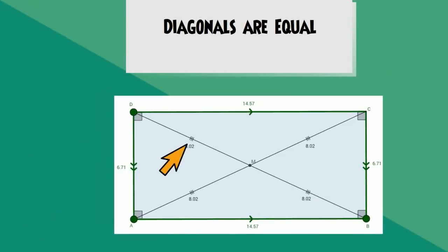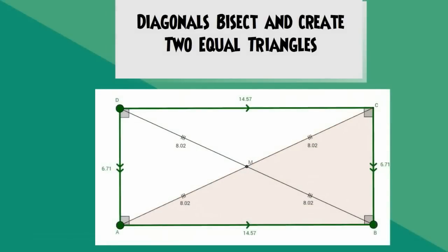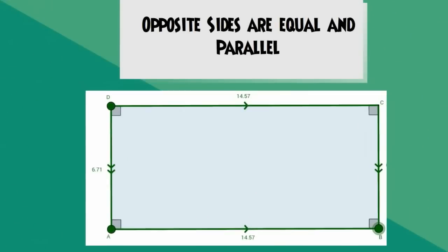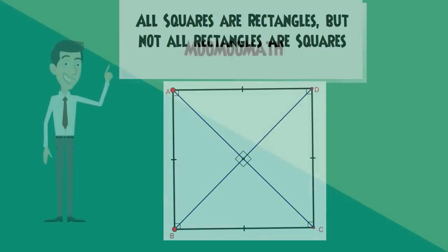Let's talk about the diagonals of a rectangle. The diagonals of a rectangle are of equal length. The diagonals also bisect and create two pairs of equal triangles. Opposite sides of a rectangle are equal and the opposite sides are parallel. All squares are rectangles, but not all rectangles are squares.